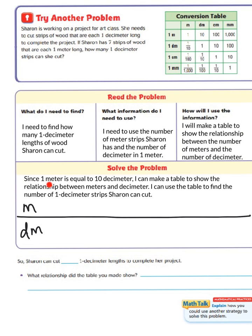Well, since one meter is equal to 10 decimeters, I can make a table to show the relationship between meters and decimeters. I can use the table to find the number of one decimeter strips Sharon can cut. So, at the top, our first row is meters. Our second row is decimeters. So, we know that if we have one meter, we have 10 decimeters.